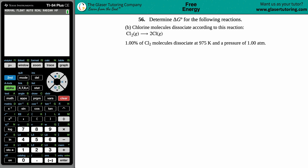Problem 56, part b: determine the delta G standard for the following reaction. Cl2 gas dissociates according to this reaction: Cl2(g) yields 2 Cl(g). 1.00 percent of the Cl2 molecules dissociate at 975 Kelvin and a pressure of 1.00 atm.